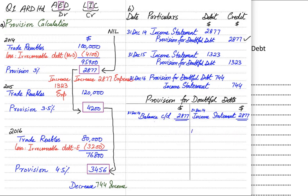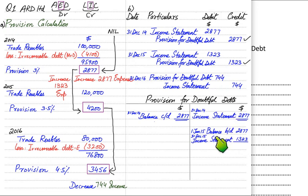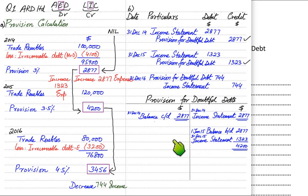The balance carried down becomes balance brought down at the start of the next period — after December 2014 becomes January 2015. In the second year, we repeat the entry: income statement debited and provision account credited. We already had a provision of 2,877 and now we increase it by 1,323. Adding both gives a total provision of 4,200. The shorter side is again the debit side in a provision account — the greater side will always be the credit side. This balance carried down becomes balance brought down for 2016.